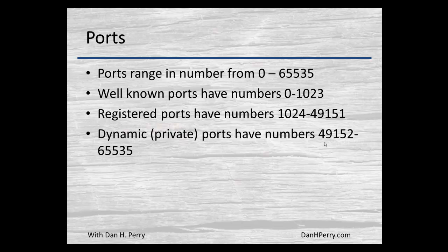Numbers starting at 49,152 are called dynamic or private ports, and those are typically used by applications when they need a port number. They just grab an unused port, although many applications will pull unused port numbers in the 1024 to 49,151 range. Your web browser, for example, will use one of these dynamic or registered ports for its transmission. Each window or tab you have open in a web browser will have a different port number, so when data is received back, the computer can identify not only that it is going to your web browser, but to which window or tab is using that connection.